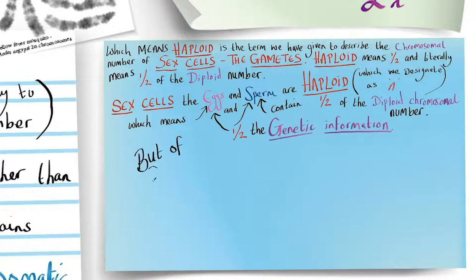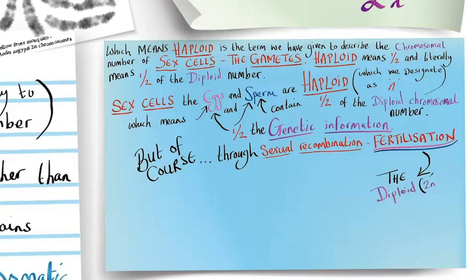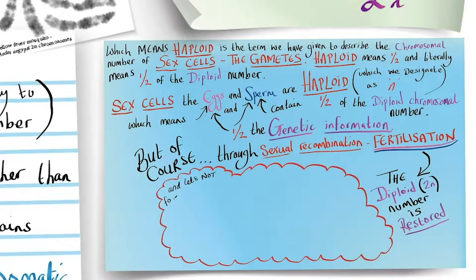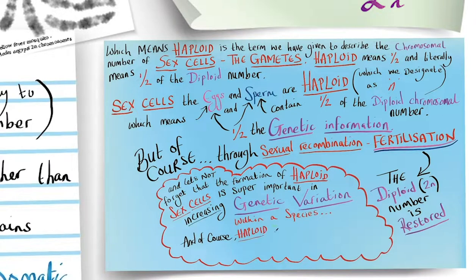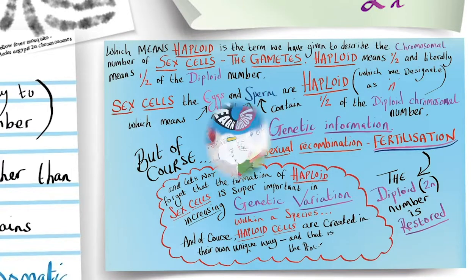But of course, through sexual recombination, fertilization, the diploid number is restored. And let's not forget that the formation of haploid sex cells is of super importance in increasing genetic variation within a species. And of course, haploid cells are created in their own unique way, and that is the process of meiosis.